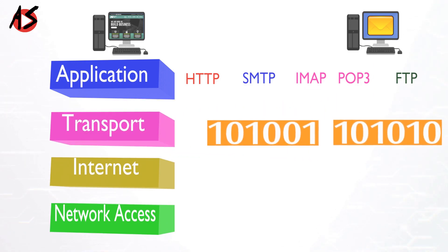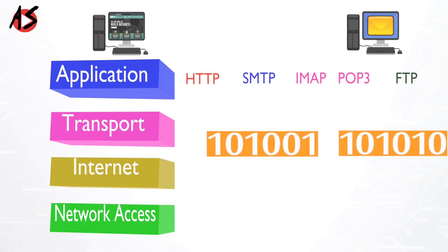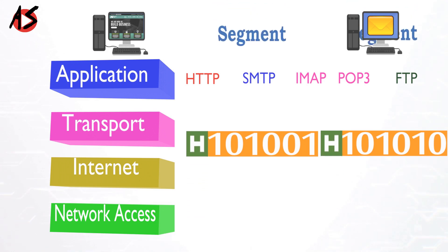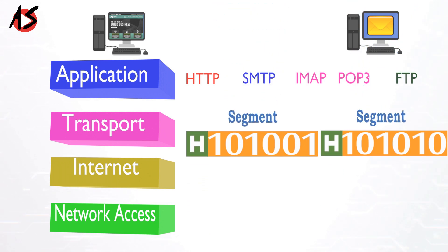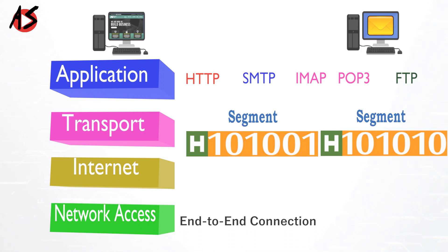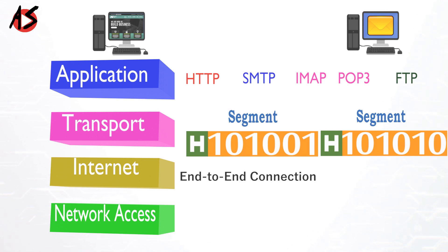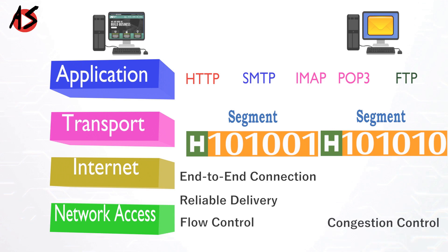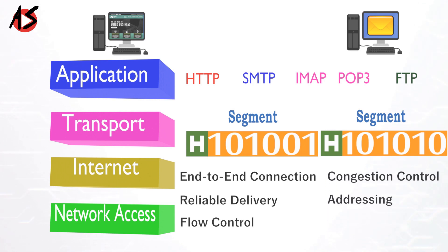The transport layer divides the data into smaller pieces and adds header information, forming a unit called a segment. In every segment, the header information is added in such a way that you can achieve services like end-to-end connection between hosts, reliable delivery, flow control, congestion control, addressing, and multiplexing.